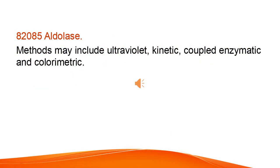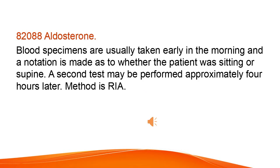Aldolase: methods may include ultraviolet, kinetic, coupled enzymatic, and colorimetric. Aldosterone: blood specimens are usually taken early in the morning, with a notation as to whether the patient was sitting or supine. A second test may be performed approximately four hours later. Method is RIA.